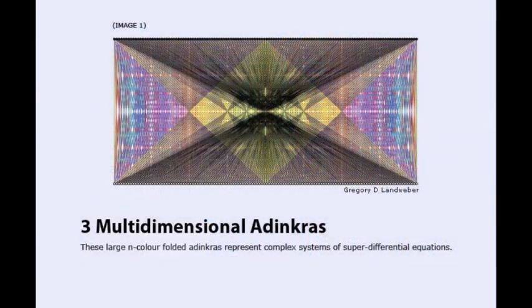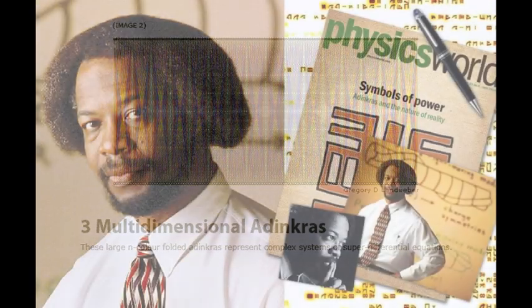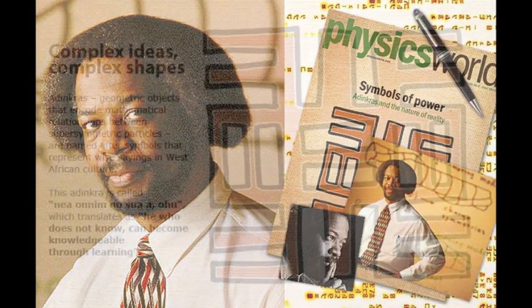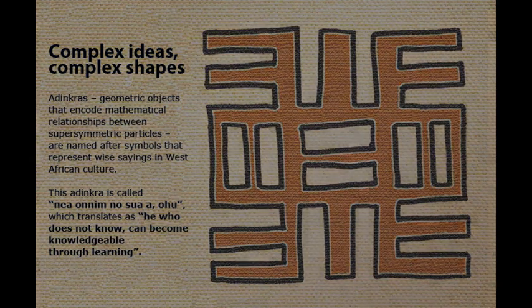Do you have any literature out on this? I can give you technical references that almost nobody in the world can understand. But this past June, the British journal Physics World asked me to write a popular-level description of what we have found. So in the June edition of Physics World — published in London — the cover story is called 'Symbols of Power.' It's about these weird symbols that have been showing behind us. We call these things adinkras. For a popular-level description, yes, we've written that. But other than this one popular-level description, it's all technical gobbledygook — and that's a technical term, by the way.